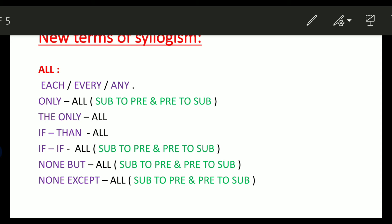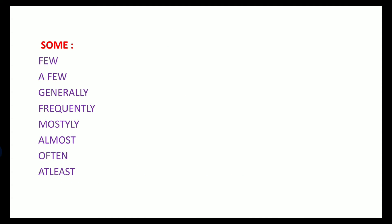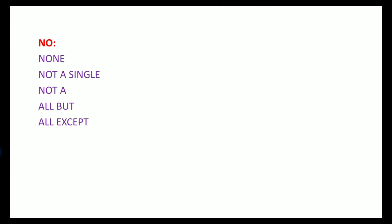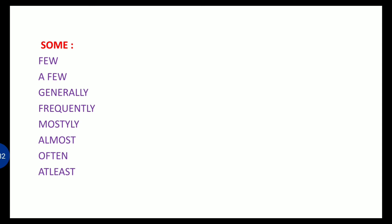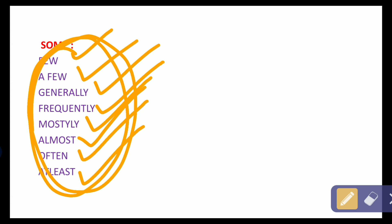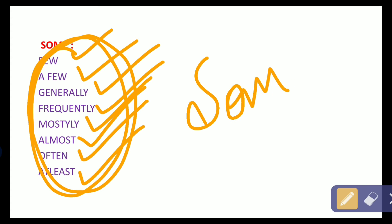Next, let's learn the new terms for 'some'. Instead of 'some', we can use: few, a few, generally, frequently, mostly, almost, often, and at least. All these terms can be used in place of the commonly used 'some'.